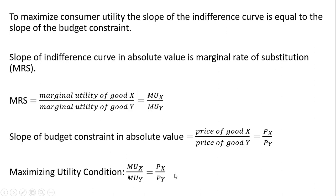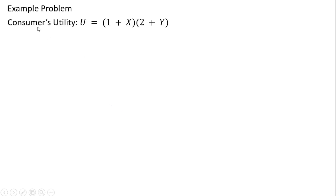On to our problem. So let's say a consumer has the following utility function where X and Y represent units of good X and good Y.